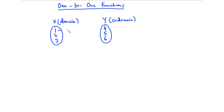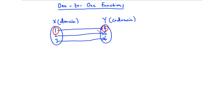Now one maps to four, two maps to five, and three maps to six. You realize that each of the elements in the domain corresponds to a distinct value in the codomain: one maps to four, two maps to five, and three maps to six.